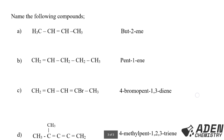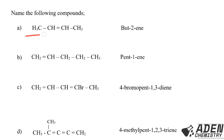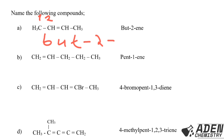Now let's name example compound (a). Step 1: count the carbon atoms in the longest chain — one, two, three, four — so the prefix is 'but-'. Step 2: locate the double bond and number from both sides; it falls at carbon number 2 either way, so we write 'but-2-'. Step 3: are there any attachments? No. So the IUPAC name is but-2-ene.